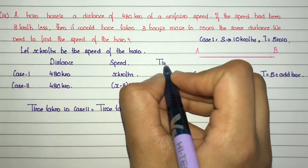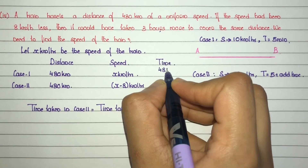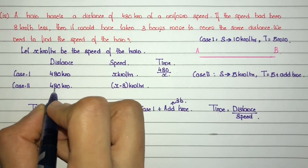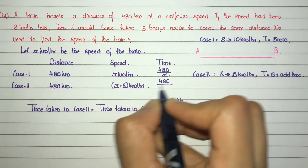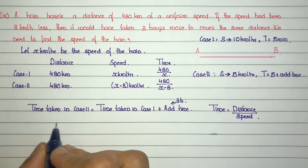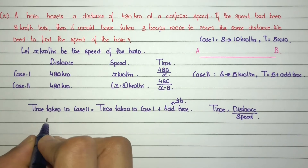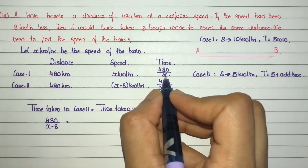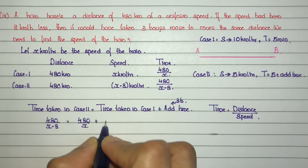In case 1, time equals distance divided by speed, which is 480 divided by x. In case 2, speed is x minus 8 kilometres per hour, so time equals 480 divided by (x minus 8). Setting up the equation: 480 divided by (x minus 8) equals 480 divided by x plus 3.